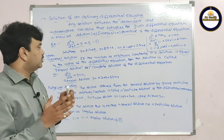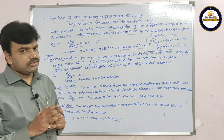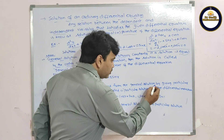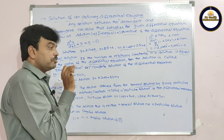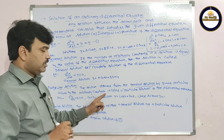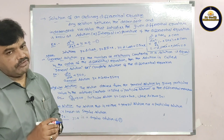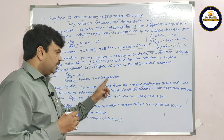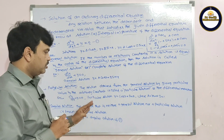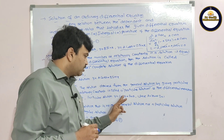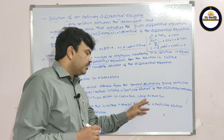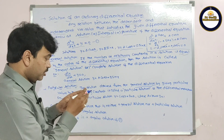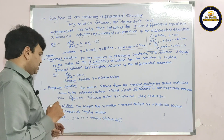The particular solution is the solution obtained from the general solution by giving particular values to the arbitrary constants. For example, from the general solution y = A·cos(x) + B·sin(x) of d²y/dx² + y = 0, if we assign A = 1 and B = 1, we get the particular solution y = cos(x) + sin(x).